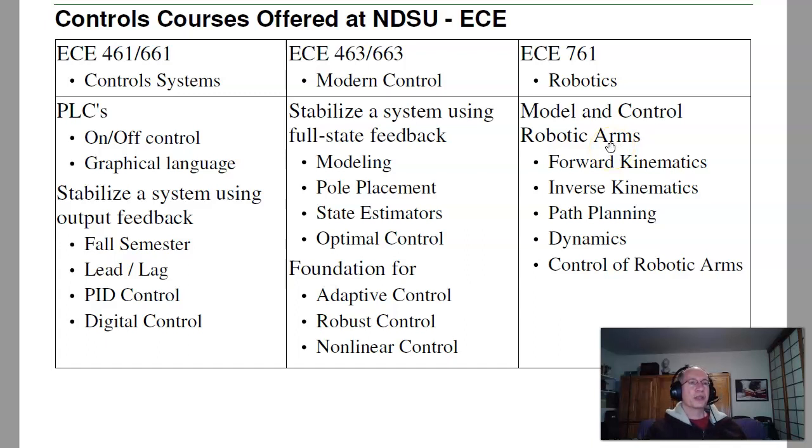In first term summer, Advanced Controls Robotics is offered. There we're looking at modeling and controlling robotic arms. That covers forward kinematics, inverse kinematics, path planning, dynamics, and control of robotic arms.